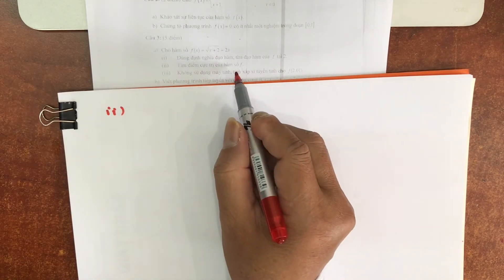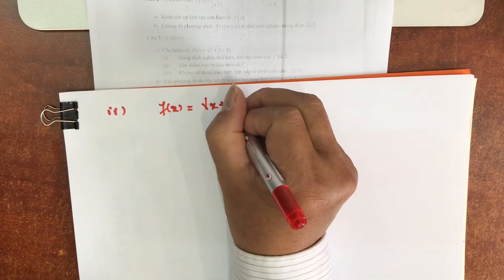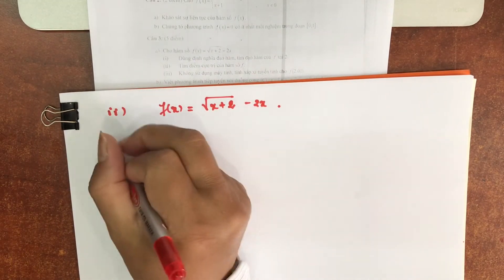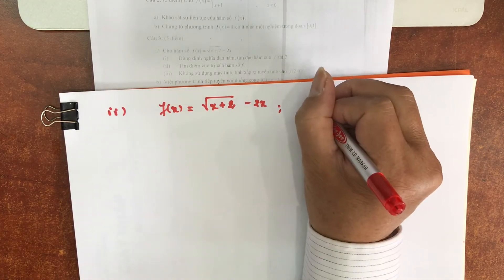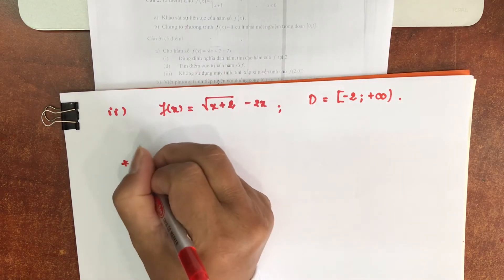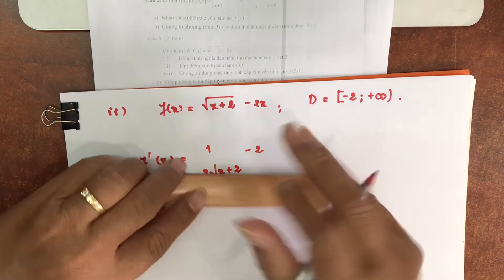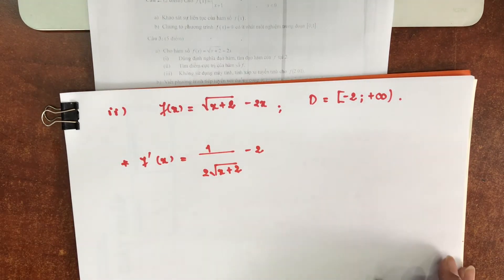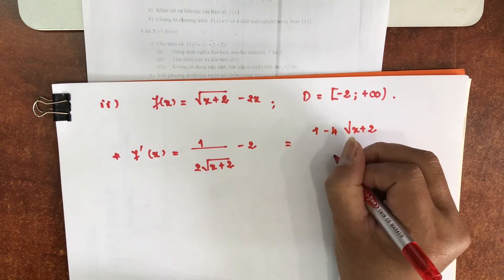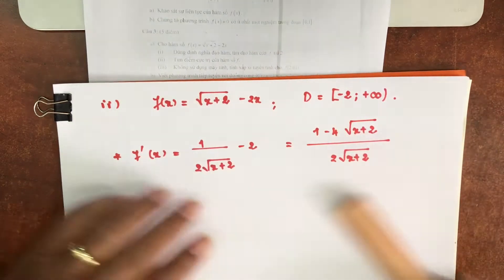Tìm điểm cực trị của hàm số F(x) bằng căn bậc 2 của (x+2). Đây là bài toán lớp 12. Cực trị của hàm số này. Miền xác định là (−2, +∞). Rồi F'(x) = 1 trên 2 căn của (x+2) trừ đi 2. Tức là 1 trừ 4 căn bậc 2 của (x+2) trên cho 2 căn của (x+2). Tuy là mức độ lớp 12 nhưng mà cũng bởi vậy dễ trừ điểm lắm nha.